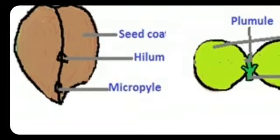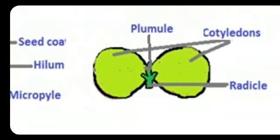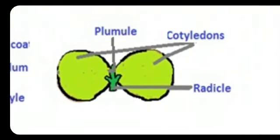Another part of the seed is cotyledons. You can see the diagram carefully — cotyledons look like leaves. In short, we can call cotyledons 'seed leaves.' The main function of seed leaves is to store food material and provide nourishment to the developing radicle and plumule.